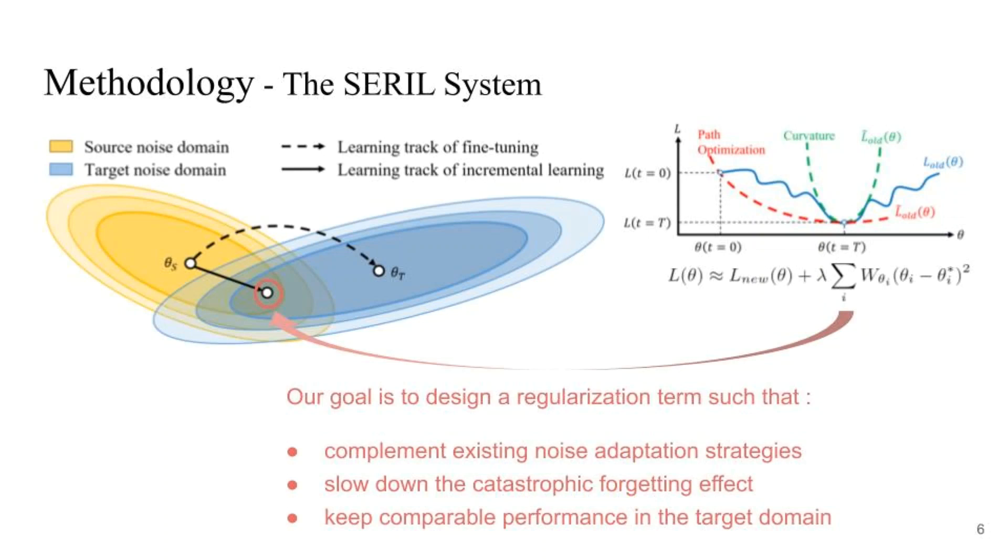In this paper, we propose a regularization-based incremental learning strategy, complementing existing noise adaptation strategy without using additional storage. With a regularization constraint, the parameters are updated to the new noise environment while retaining the knowledge of the previous noise environments. It allows the model to slow down the catastrophic forgetting effect and keep comparable performance in the target domain.